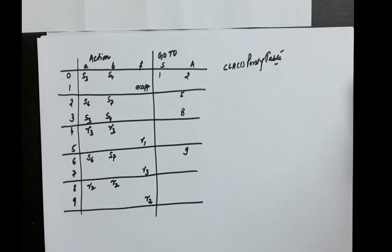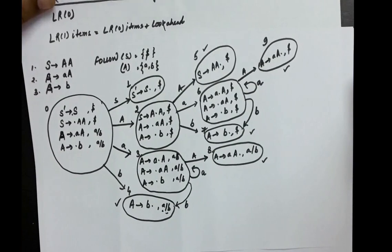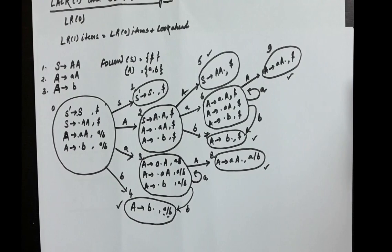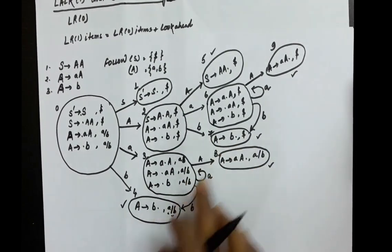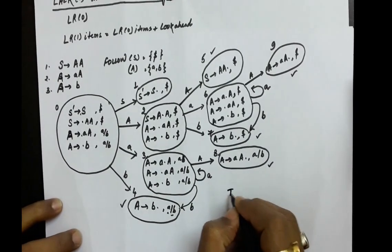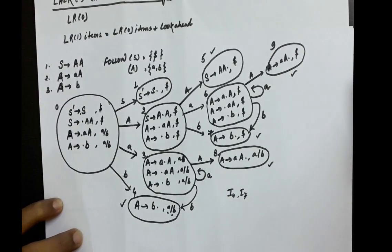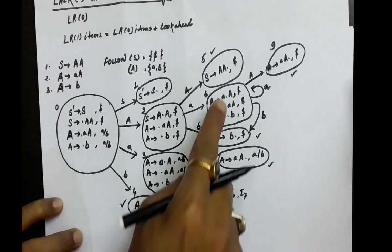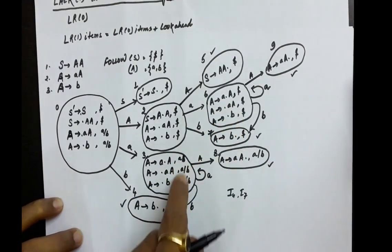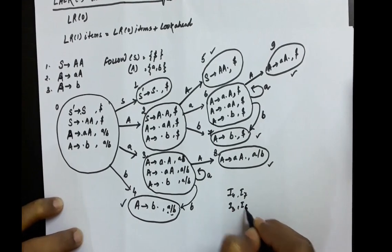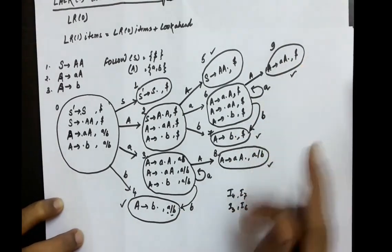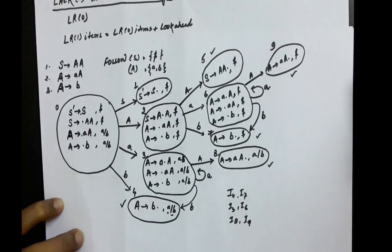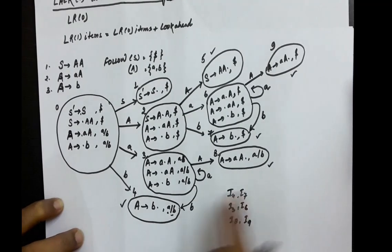Now, if you see the CLR1 parsing table and look at these states, some of the states have some commonality. For example, state number 4 and 7 — they are the same but the lookaheads are different. Similarly, state number 8 and 9 are the same but the lookaheads are different.